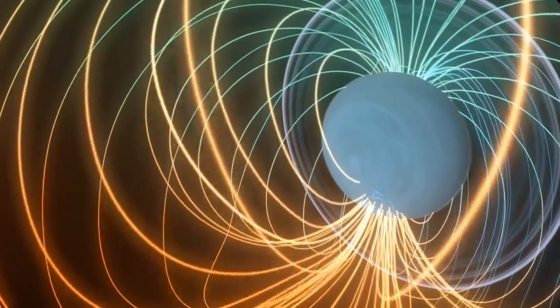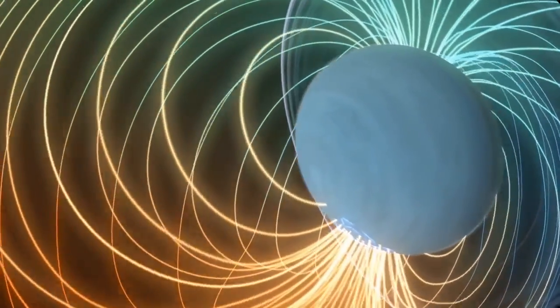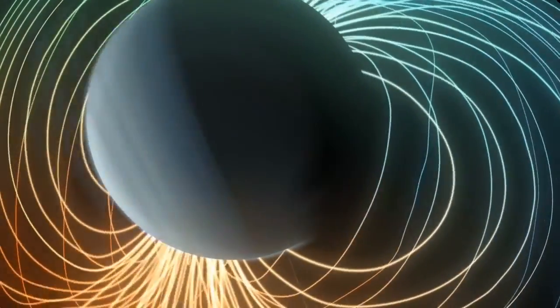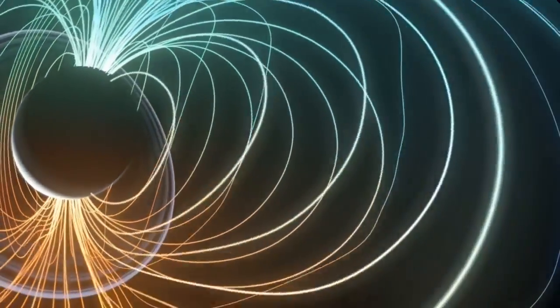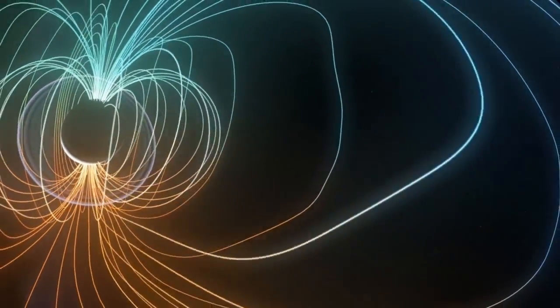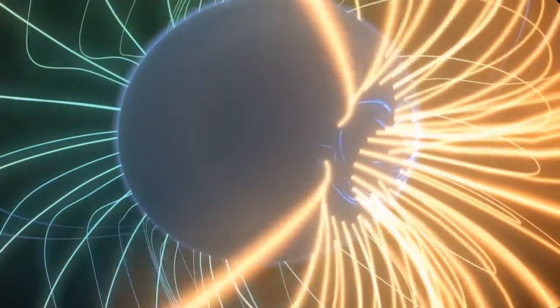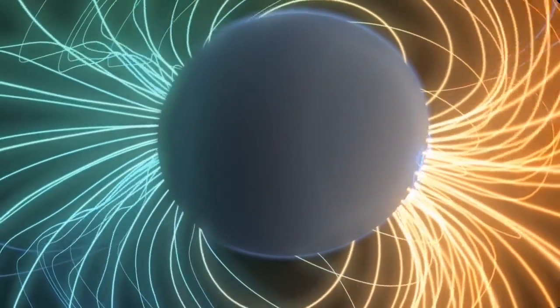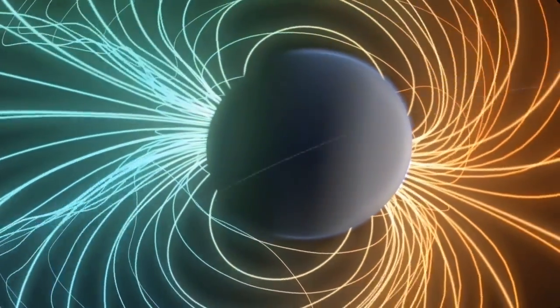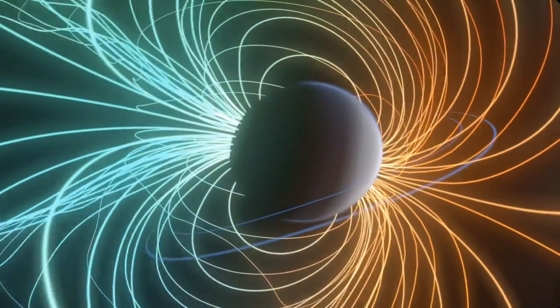Uranus contains both gases and ices of water, ammonia, and methane. Although this planet rotates on its side, its tilted magnetic shield protects like the other giant planets. Neptune's magnetic field is also strongly tilted, resulting in a lopsided magnetic shield, with its poles occasionally exposed to the solar blast.